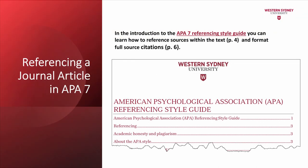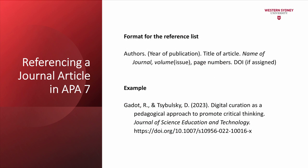In the introduction to the APA 7 referencing style guide, learn how to reference sources within the text and how to format full source citations. When creating a reference, enter the full information available from the journal article's website using an appropriate format for APA 7 style referencing. Please pay attention to the capitalization of the title and use of italics and punctuation.